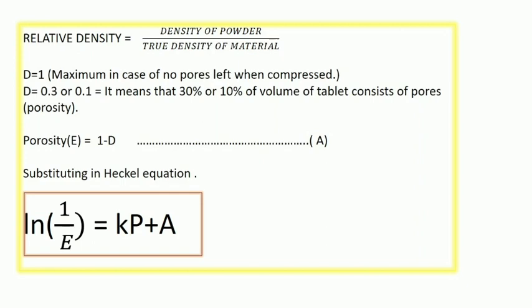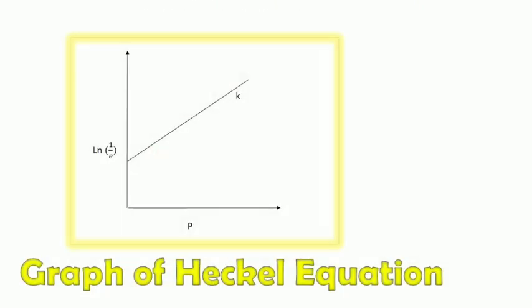By substituting this in the first equation, we get ln of 1 over E equals k P plus A. If we convert this equation into a straight line, we get a straight line between ln of 1 over E versus P. It means we are applying pressure and the porosity is decreasing. Here we are plotting graph P versus reciprocal of porosity, that's why we are obtaining a straight line.